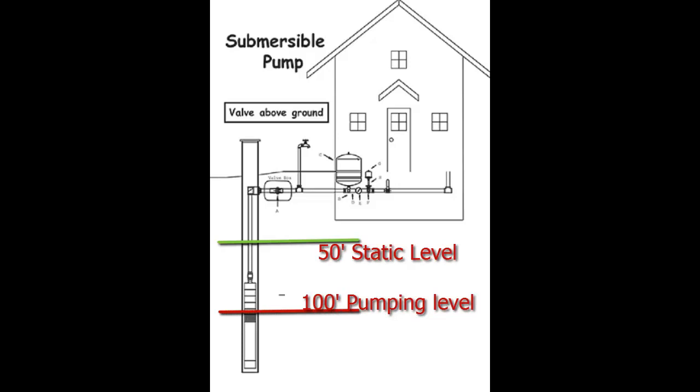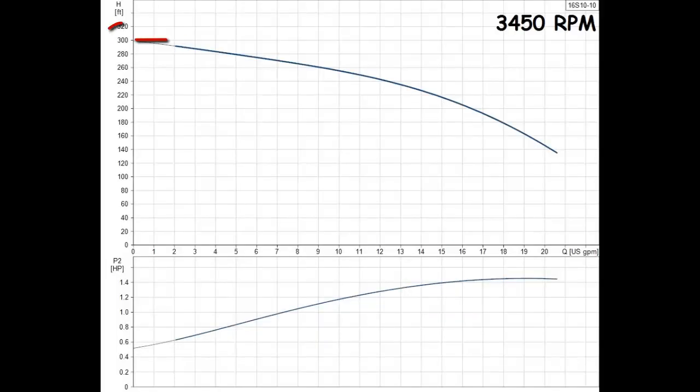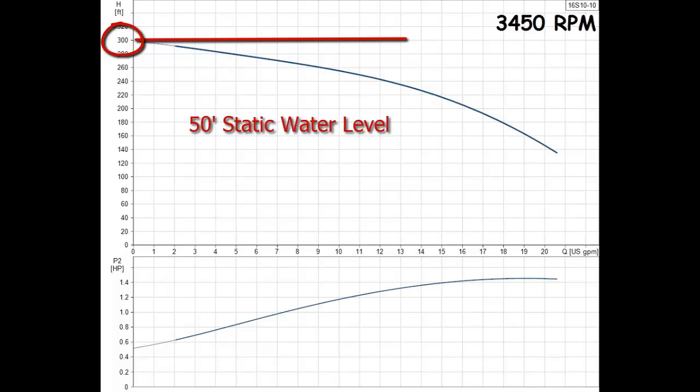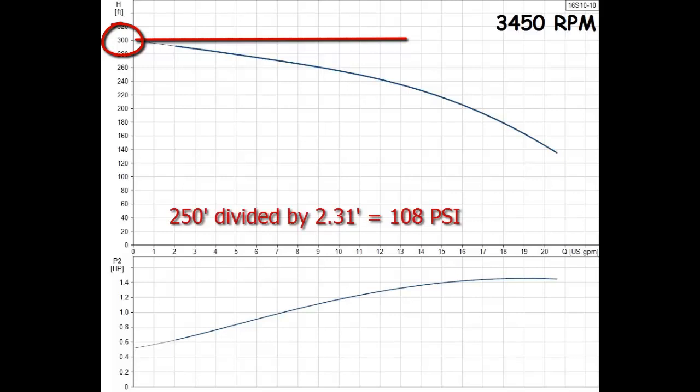Using the previous example of a well with a pumping depth of 100 feet, let's say the static water level measures 50 feet. Looking at the full speed curve at zero flow, this pump can build a total head of 300 feet. Since the static water level is 50 feet, we can deduct that from the 300 feet total the pump can build. 300 feet minus 50 feet equals 250 feet of head. 250 feet divided by 2.31 equals 108 PSI.